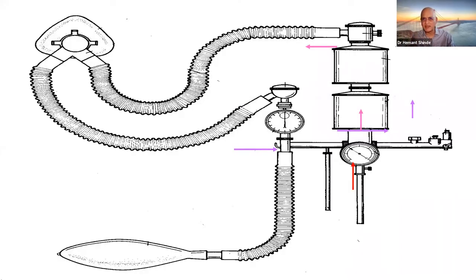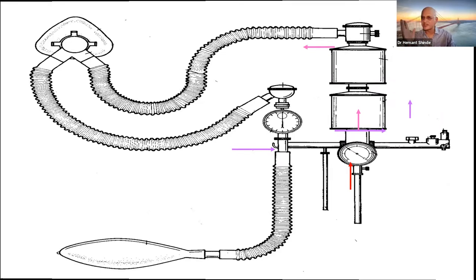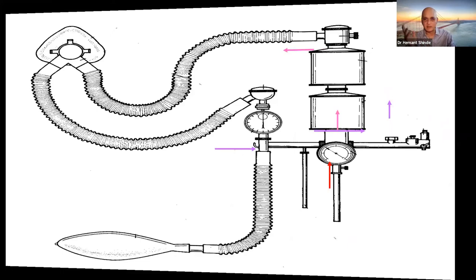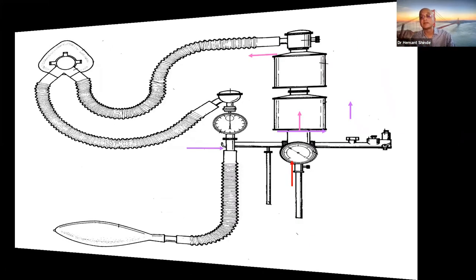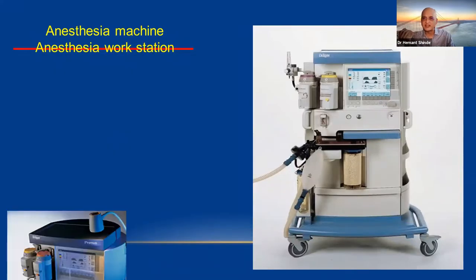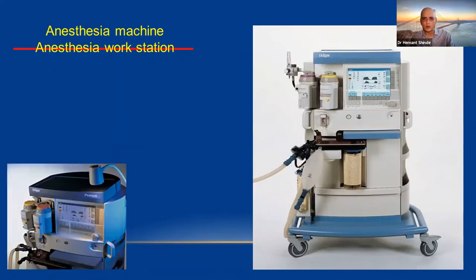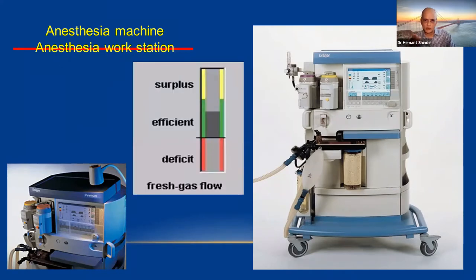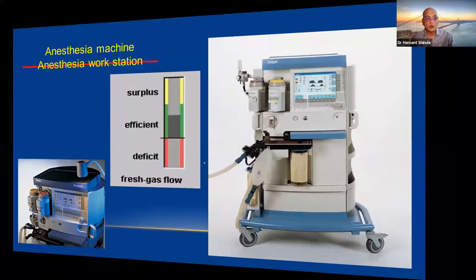Today, any anesthesia machine — whatever the make — essentially has an inspiratory limb, expiratory limb, pressure valves, soda lime canister, and pop-off valves. Modern high-tech machines are now called anesthesia workstations. Some have excellent features, like the econometer on the Dräger machine, which shows whether your flows are surplus (red zone), efficient (green zone), or in deficit.